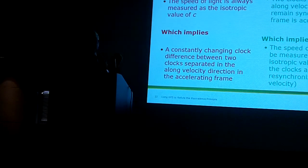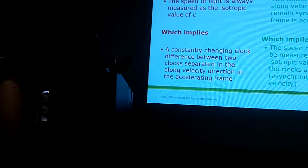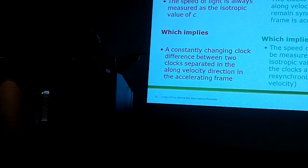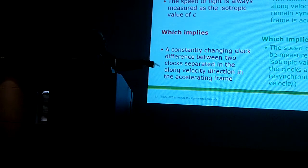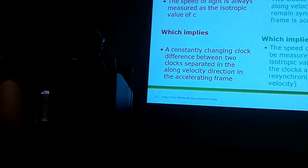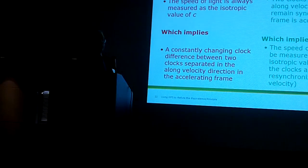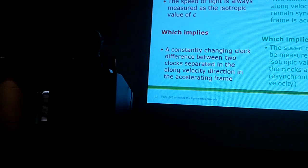This implies a constantly changing clock difference, because that's required if you're going to measure C. The speed of light will not be measured as isotropic value of C unless the clocks are re-synchronized if Goy is right with its pocket boxes. So they're significantly different, and we're going to try to show that, in fact, the implication of Goy is the one that's right.